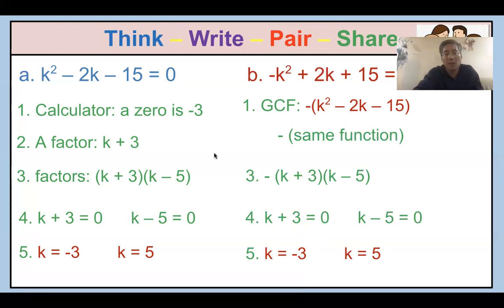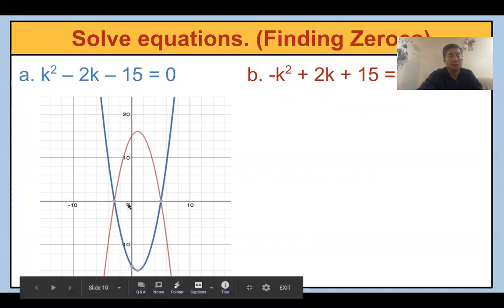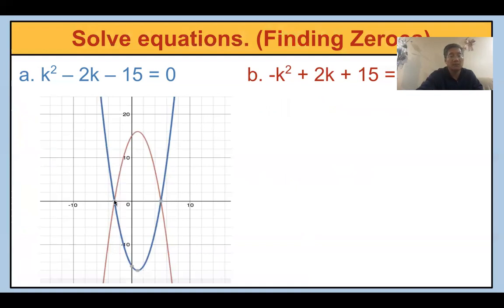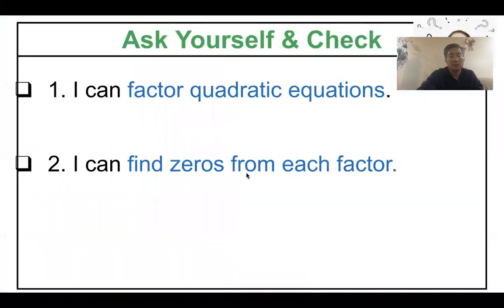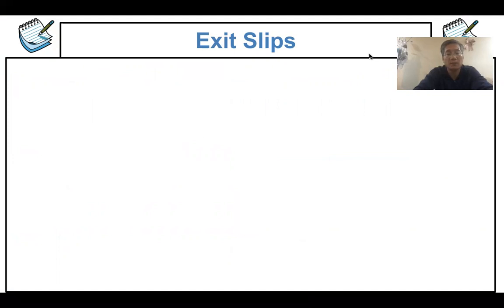Does everybody understand? This is the graph — if you try in your calculator, you will see the graph has the same zeros: negative three and positive five. Now keep going — you have 8 and 12 questions, and then the exit ticket where you rate yourself. Turn them all in on Google Classroom. Let's stop here.